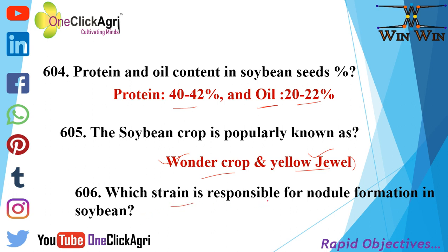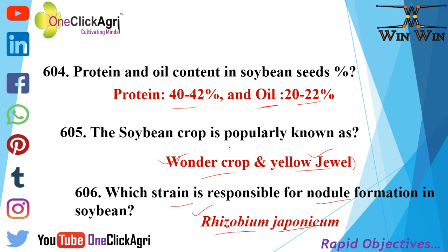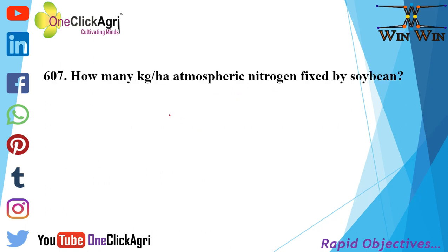Which strain is responsible for nodule formation in soybean? That is Rhizobium japonicum. How many kg per hectare of atmospheric nitrogen is fixed by soybean? 40 kg.